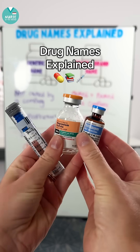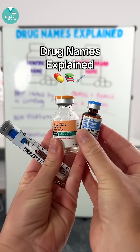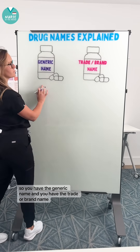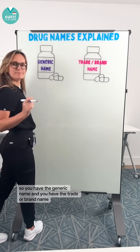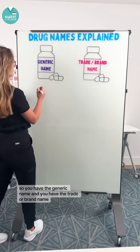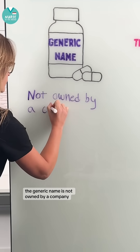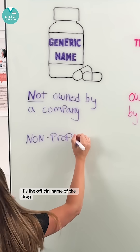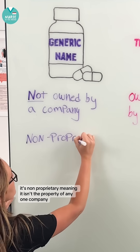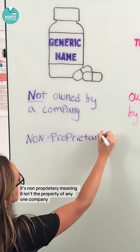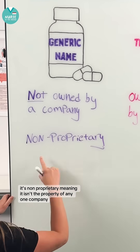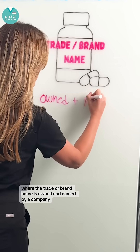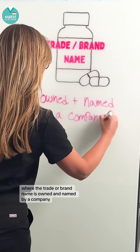If you're taking pharmacology this semester, you need to understand drug names. You have the generic name and you have the trade or brand name. The generic name is not owned by a company — it's the official name of the drug. It's non-proprietary, meaning it isn't the property of any one company, where the trade or brand name is owned and named by a company.